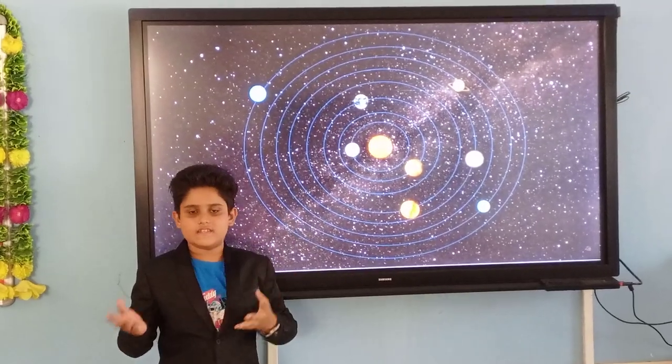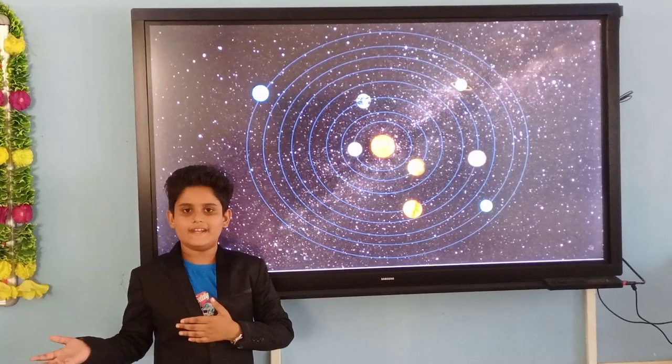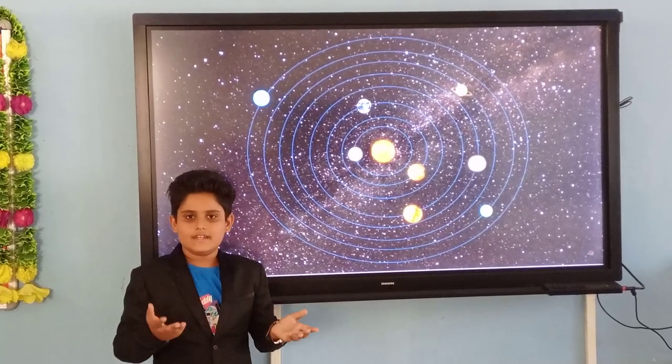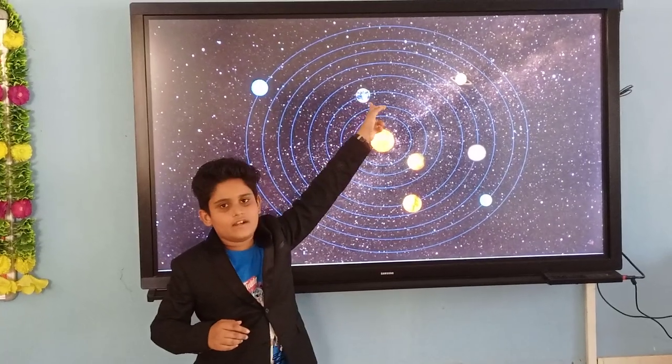Next is Earth. Earth is my favorite planet in the solar system. It is the third planet. It has good life and we all live here. It is blue and green in color.